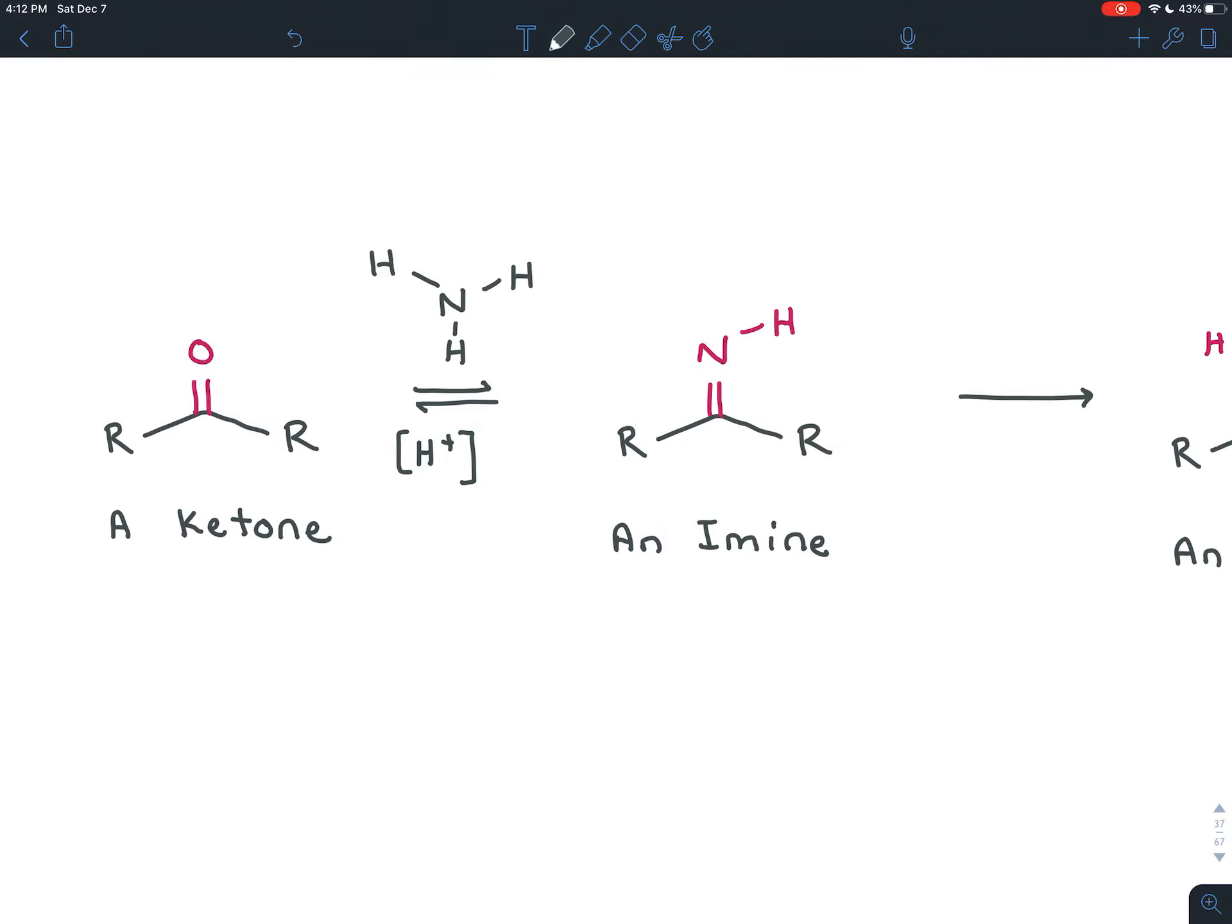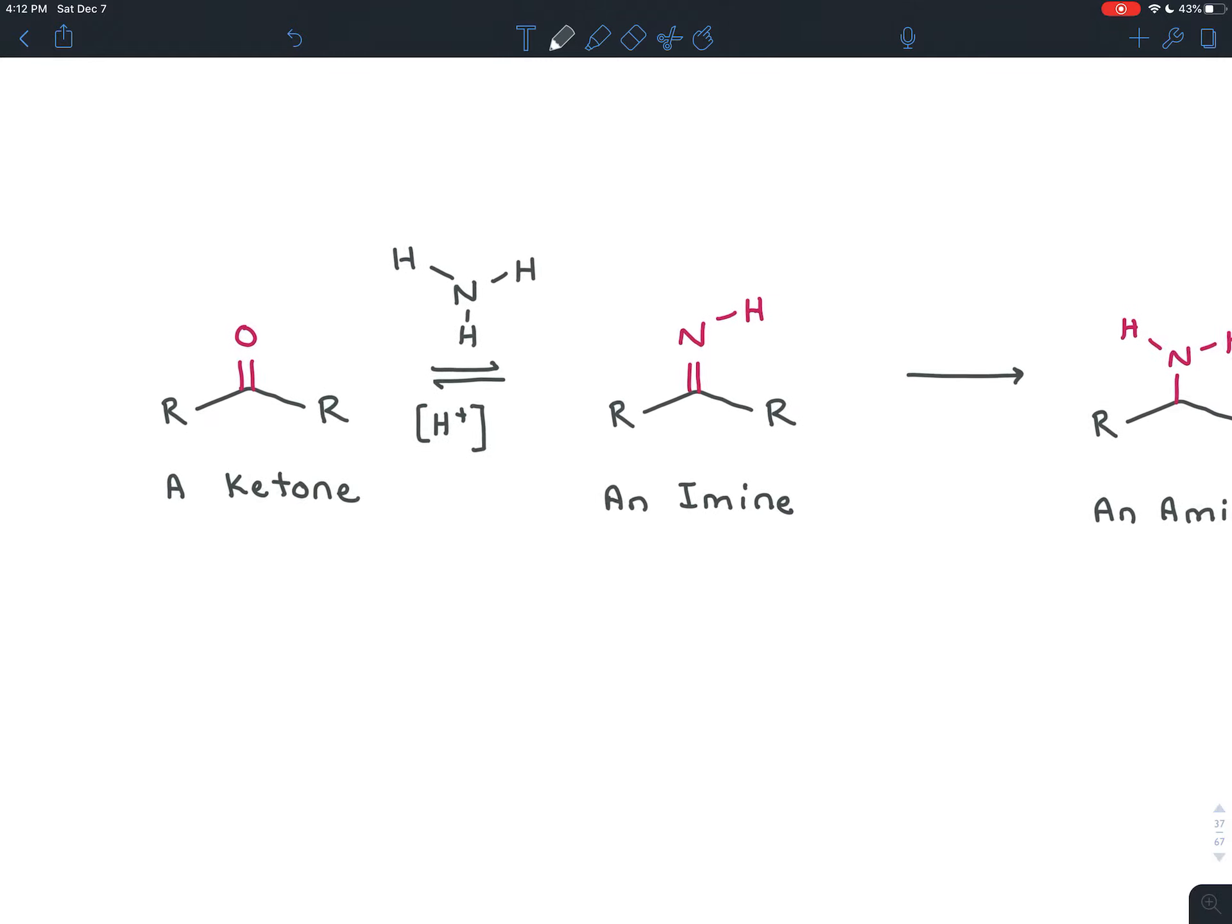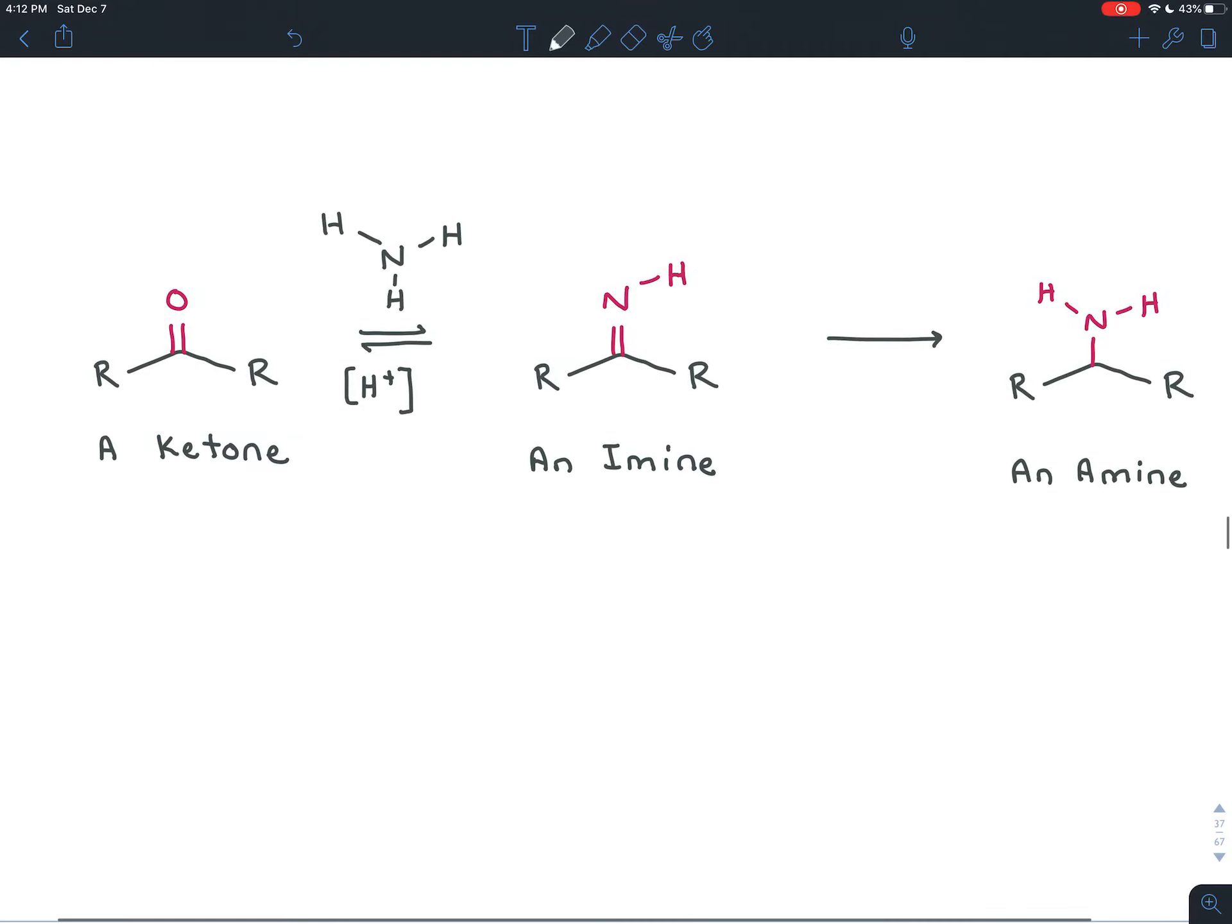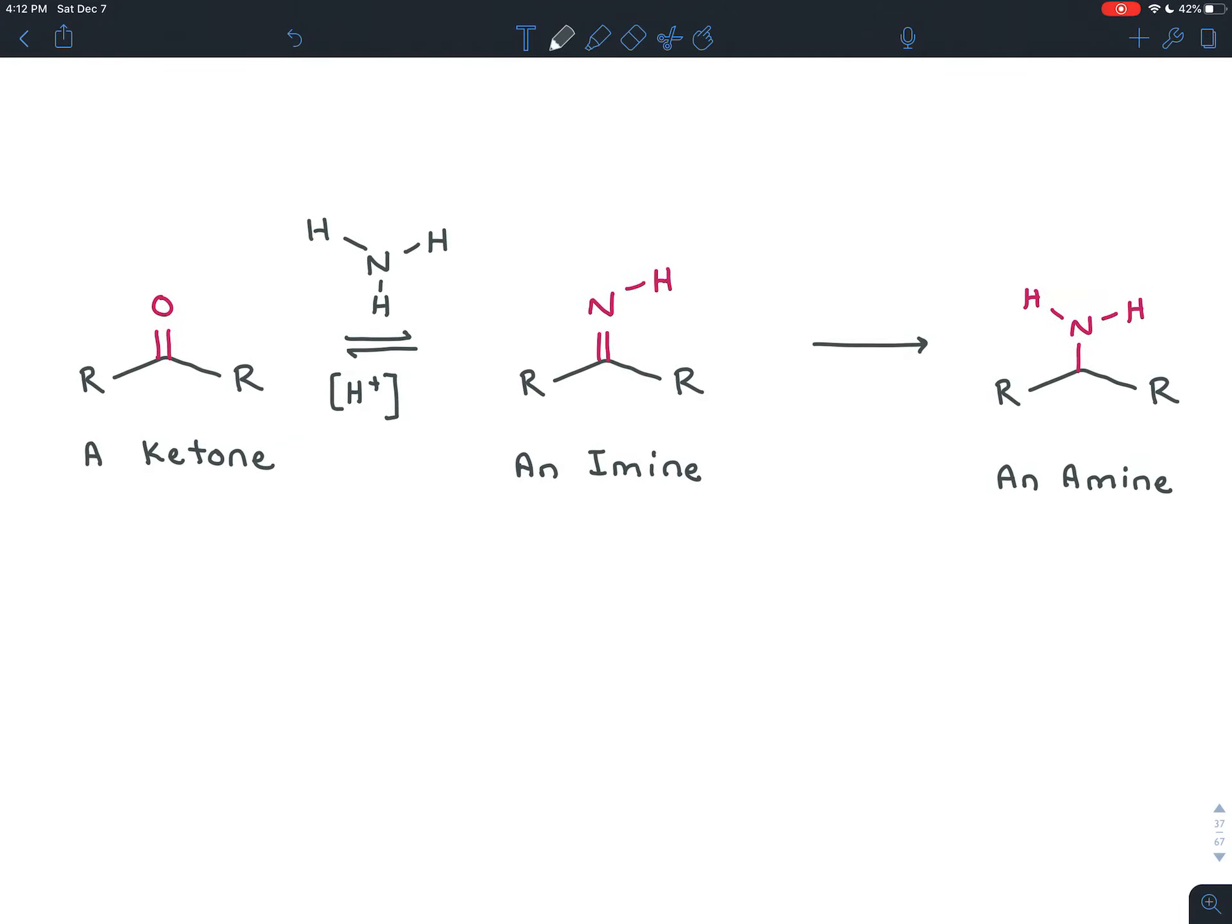Now, if we wanted a different thing here than hydrogen, we could have put that onto our original nitrogen. So it doesn't have to be ammonia every time. I'm just using that here as an example because it's the simplest nitrogen compound. Once you have the imine, you can reduce it.